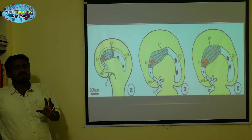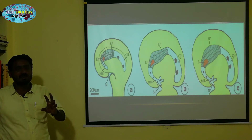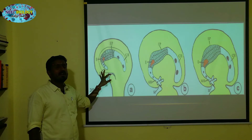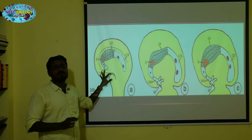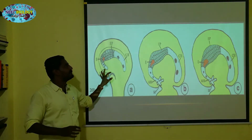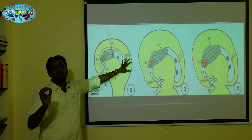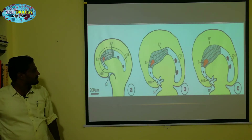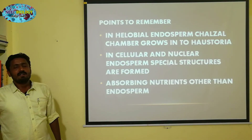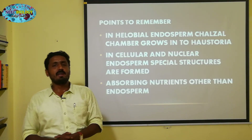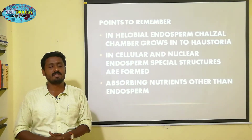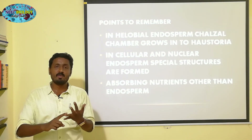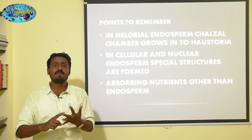Now, we are going to study this diagram. There are two haustoria: one is the micropylar haustoria and the other is the chalazal haustoria. Now we have three types of endosperm: one is cellular endosperm, nuclear endosperm, and helobial endosperm.